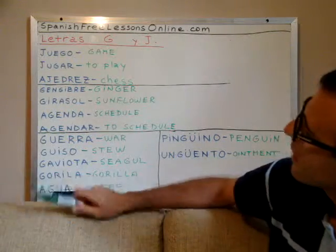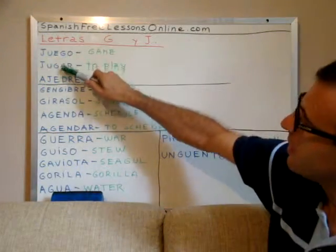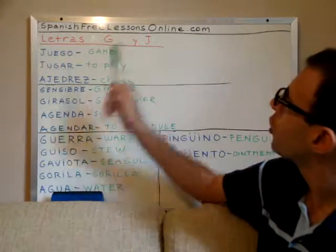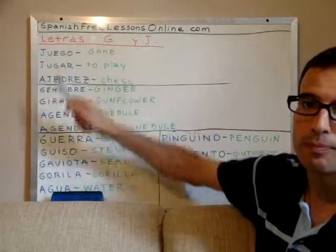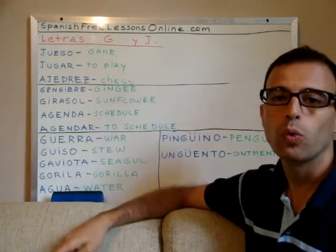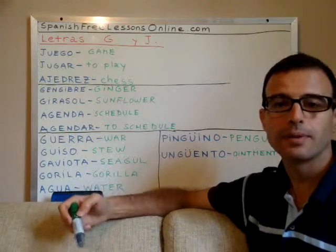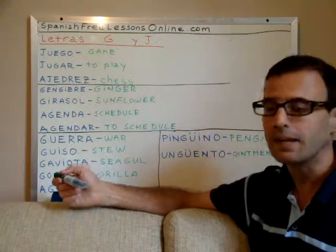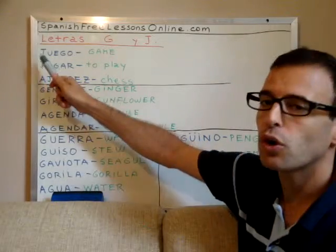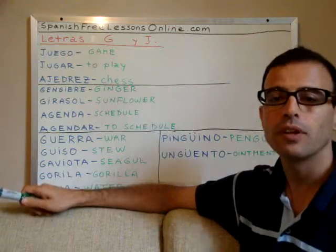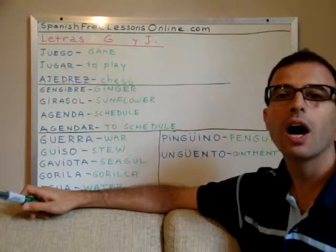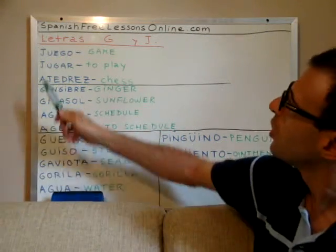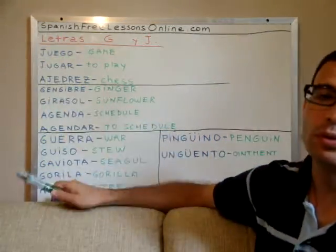Let's begin with examples of words that begin with J. We have 'juego,' that is 'game' — un juego, a game. Vamos a jugar un juego — let's play a game. You see, this is 'juego' — scratching the throat. It's not the exhalation of the English H. 'Jugar' is to play, the verb.